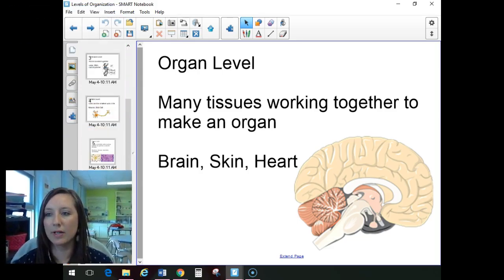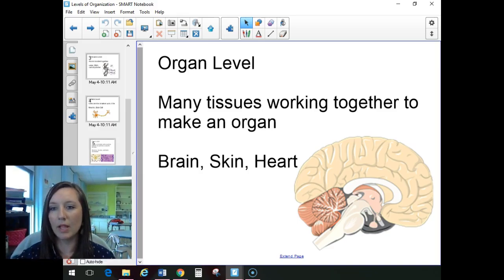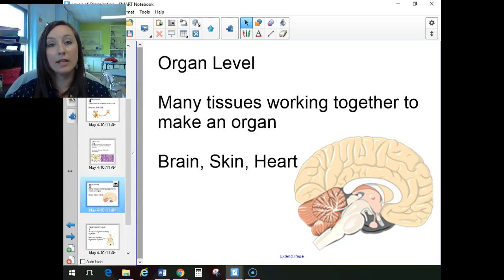Our next level is going to be the organ. So now we take those tissues and we put many tissues working together, and that's going to make your organ. So your brain, your skin, your heart, those are all of our organs. I focus on the brain because the nervous tissue, when we put different types of nervous tissue together, that's going to make up our brain. We might have nervous tissue in there. We might have some muscle tissue, some epithelial tissue. We're mixing those four types of tissues together in order to make an organ, but they're all working together for that organ to do its job.